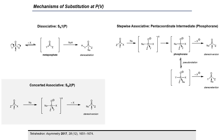The second type of mechanism for substitution at phosphorus-5 is a concerted associative mechanism, or SN2P, in which phosphorus undergoes concerted bond formation with a nucleophile and bond cleavage with a leaving group via a pentacoordinate transition state to form the nucleophilic substitution product. Because this mechanism is concerted and proceeds via backside attack, this is a stereoinvertive process, resulting in an inversion of configuration at phosphorus.